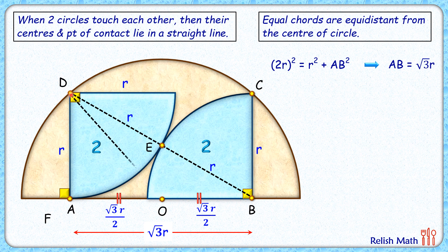Let's join DO. Now DO is the radius of this brown semicircle—let's denote it by capital R. If we consider this right angle triangle DAO and again apply Pythagoras theorem, we get R² = r² + (√3r/2)². Simplifying this, we get R² = r² + 3r²/4, so R² = 7r²/4.